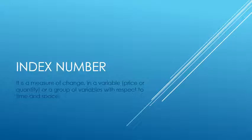Today we are going to learn what is an index number. An index number is a measure of change in a variable. That variable may be price or quantity of some commodity, or a group of variables or commodities, with respect to time and with respect to space. There are some other definitions also available in the literature.